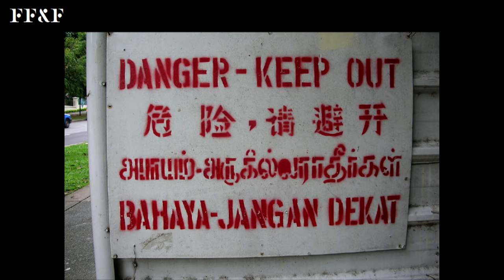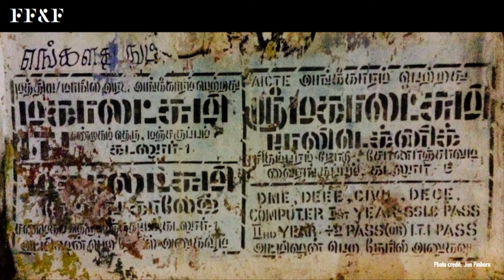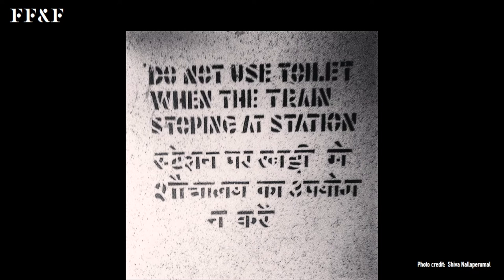You get a lot of interesting signage with stencils when you're mixing scripts. One major benefit is that the person creating the sign doesn't have to read or write all of those scripts — you can just spray it on. So you have some Tamil, some Chinese, and some Latin. This one, snapped by John Pinhorn, has really chubby Tamil — I love the weight — paired with a condensed Tamil and some Latin. Another one, snapped by Shiva on a train, really breaks up the forms — particularly the Hindi. You see a lot of bridges in the O, no crossbar — it's a textural thing.